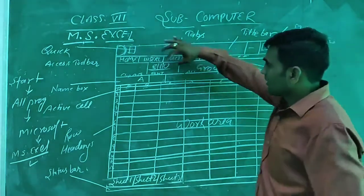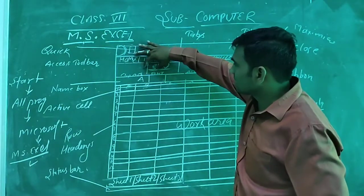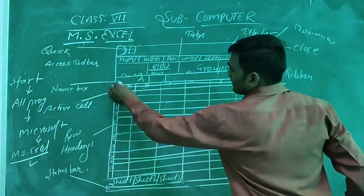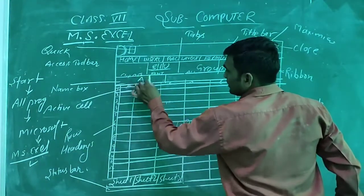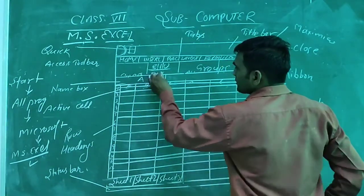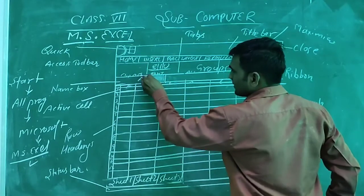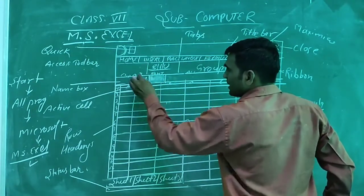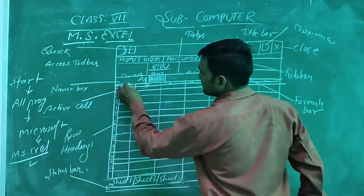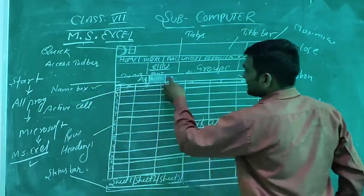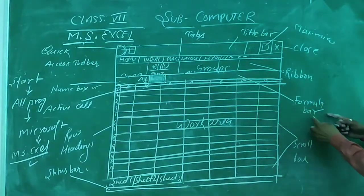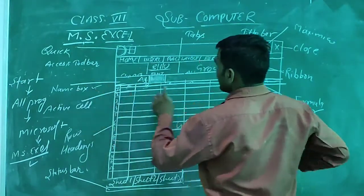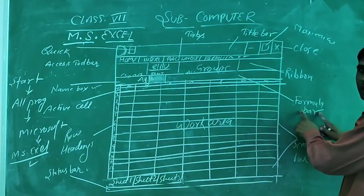Below the ribbon section there is one bar and this bar is divided into two parts. The first part is called the name box, and the second part is called the formula box. The left part is the name box and the right part is the formula box.